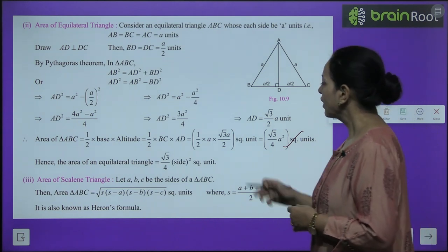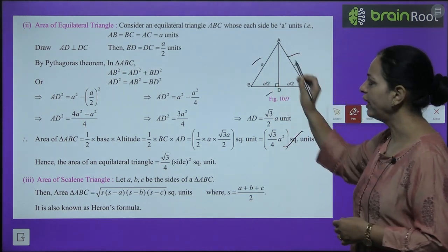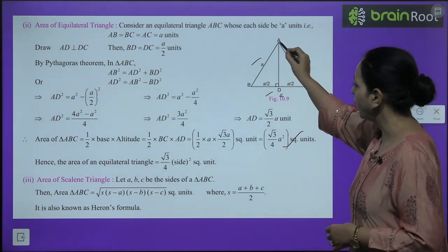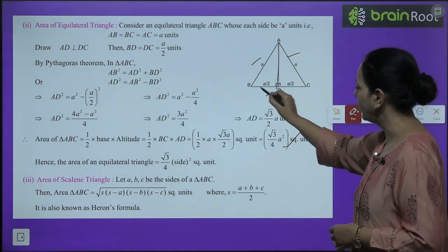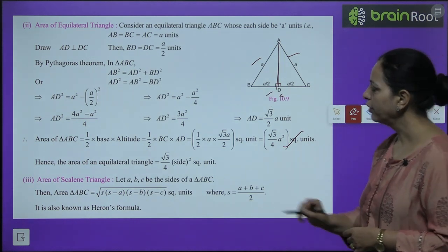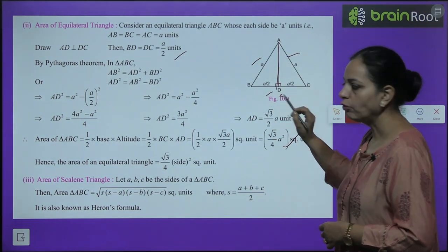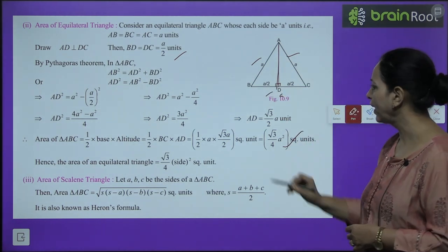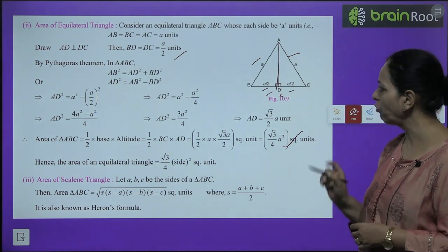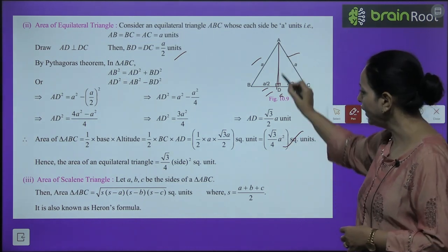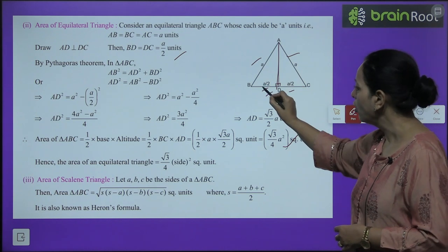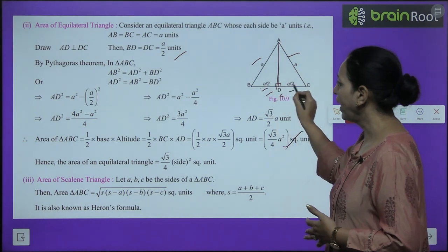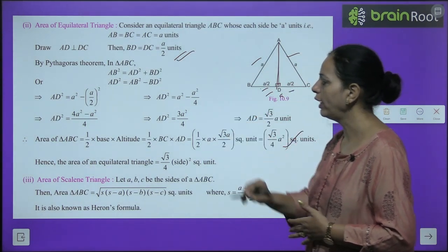Consider an equilateral triangle with each side = a. Draw a perpendicular from the apex to the base. In an equilateral triangle, the perpendicular bisects the base, so BD = DC = a/2. Using Pythagoras in triangle ABD: AB² = AD² + BD², so a² = AD² + (a/2)².